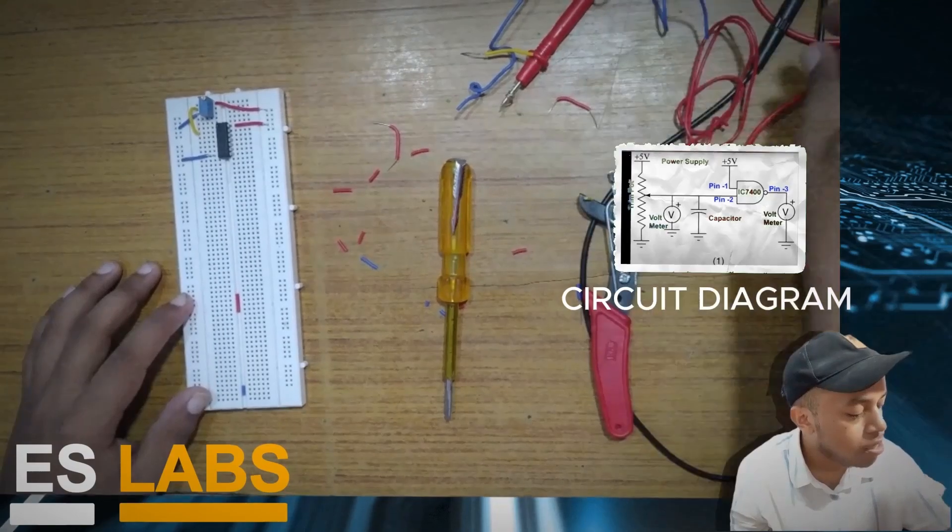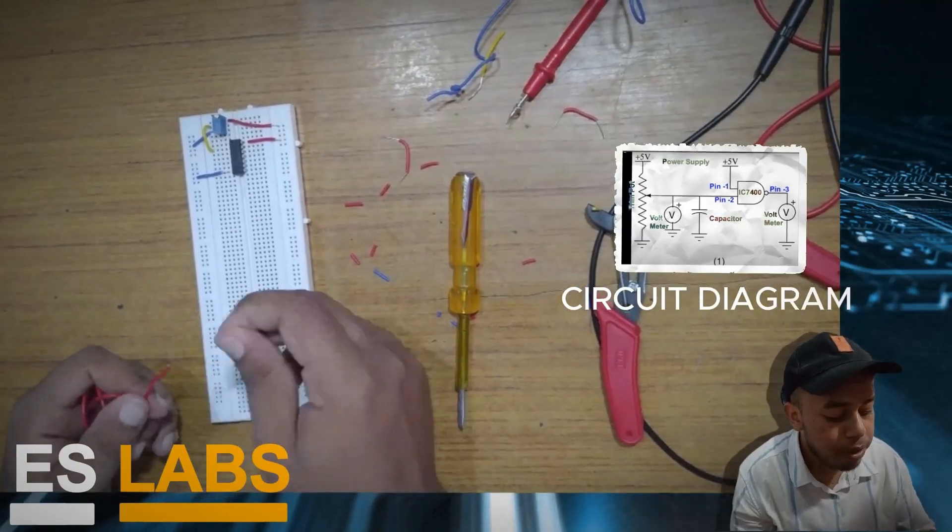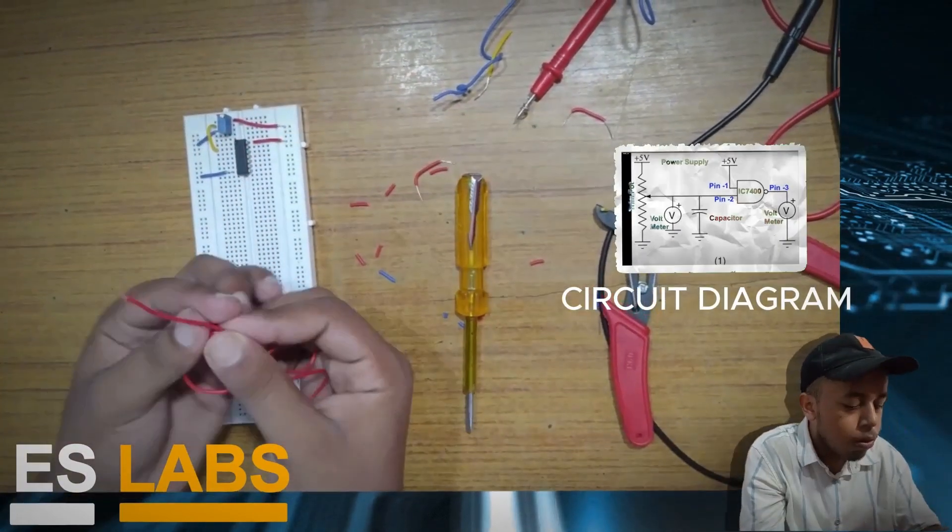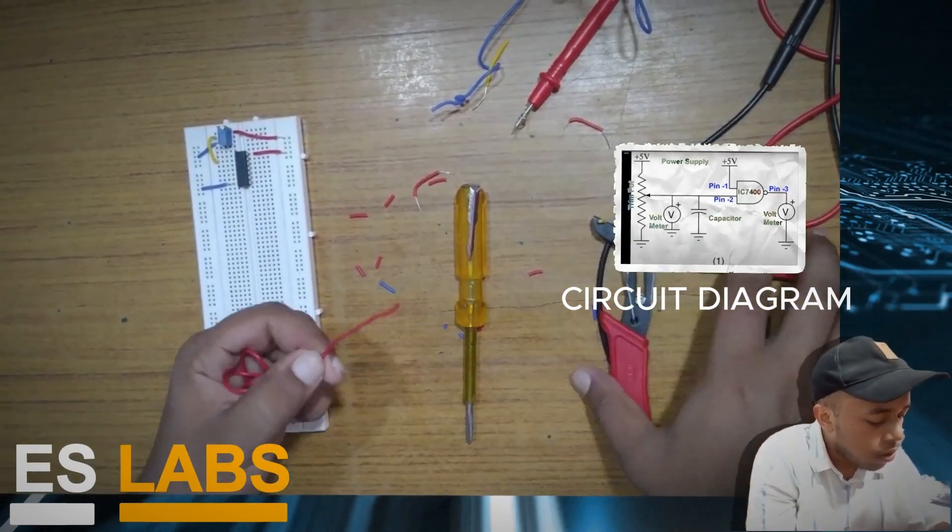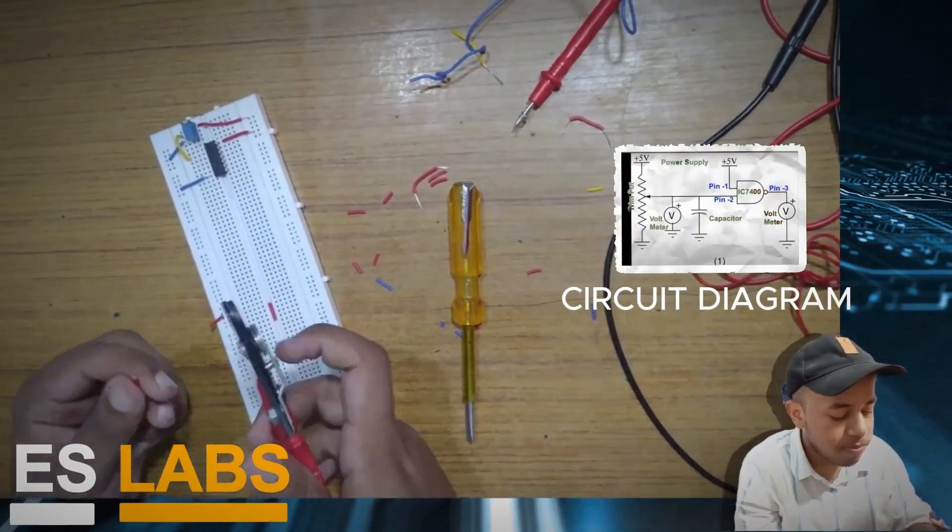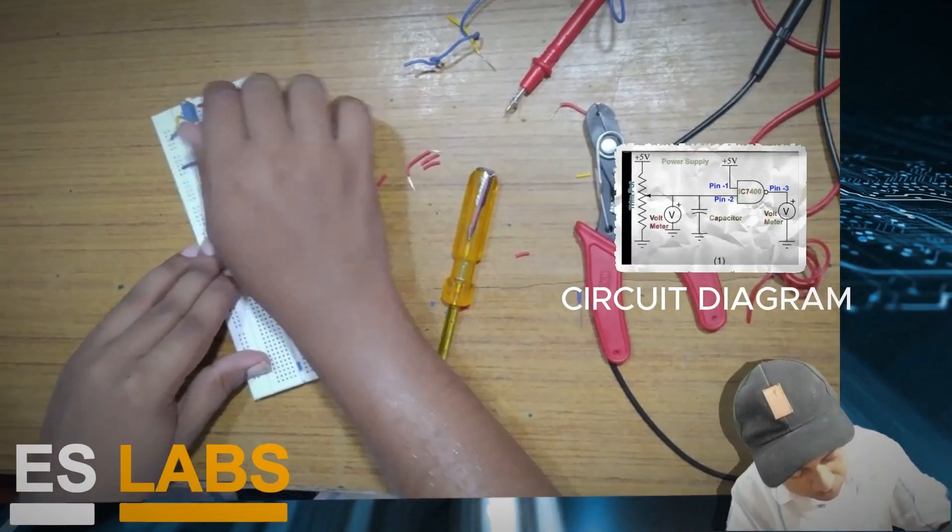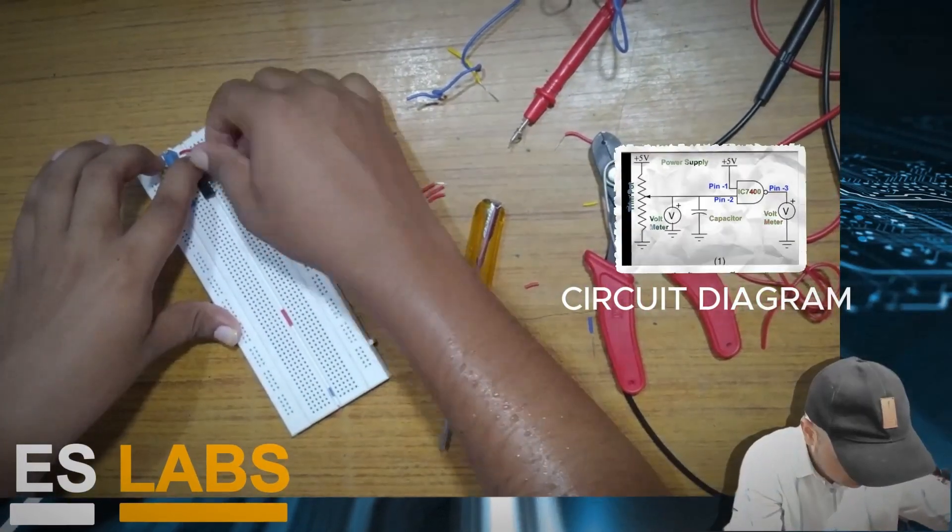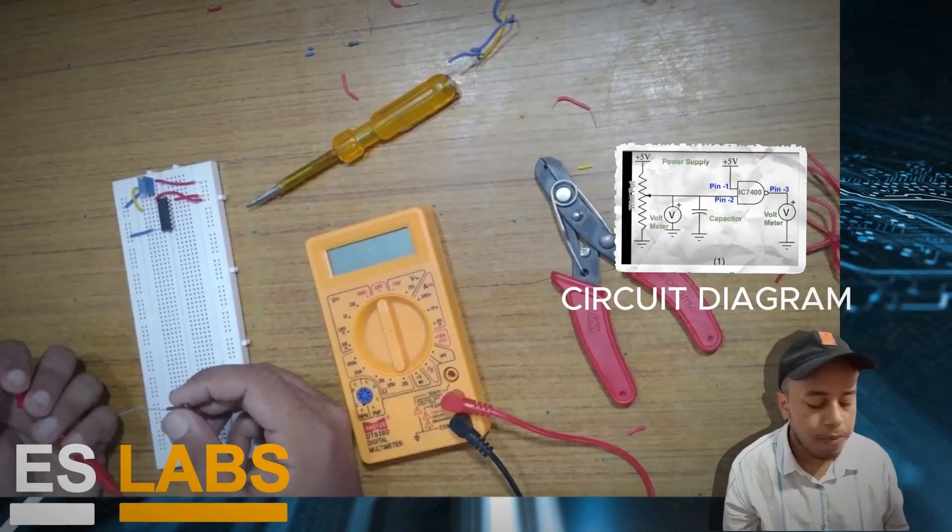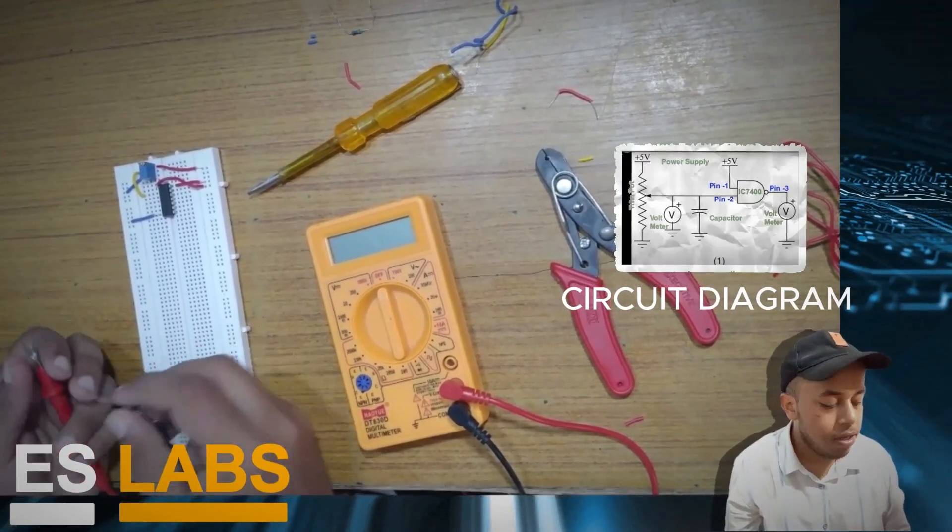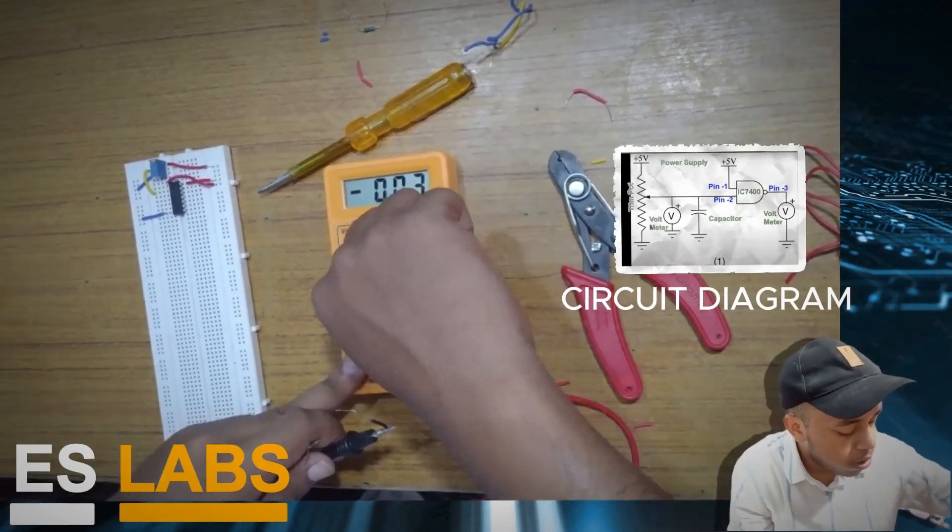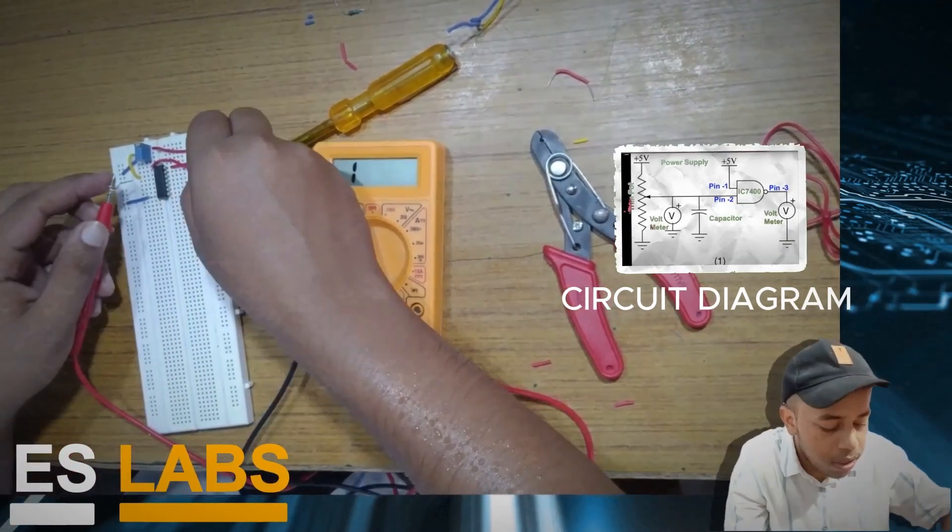Now the last thing we have to do is make the connection of pin 1 to the VCC. So measure the length of the wire we need. Before proceeding in the experiment we have to check the continuity of our connection. So we take out our multimeter with two probes and adjust its knob to this diode icon and check our connectivity.